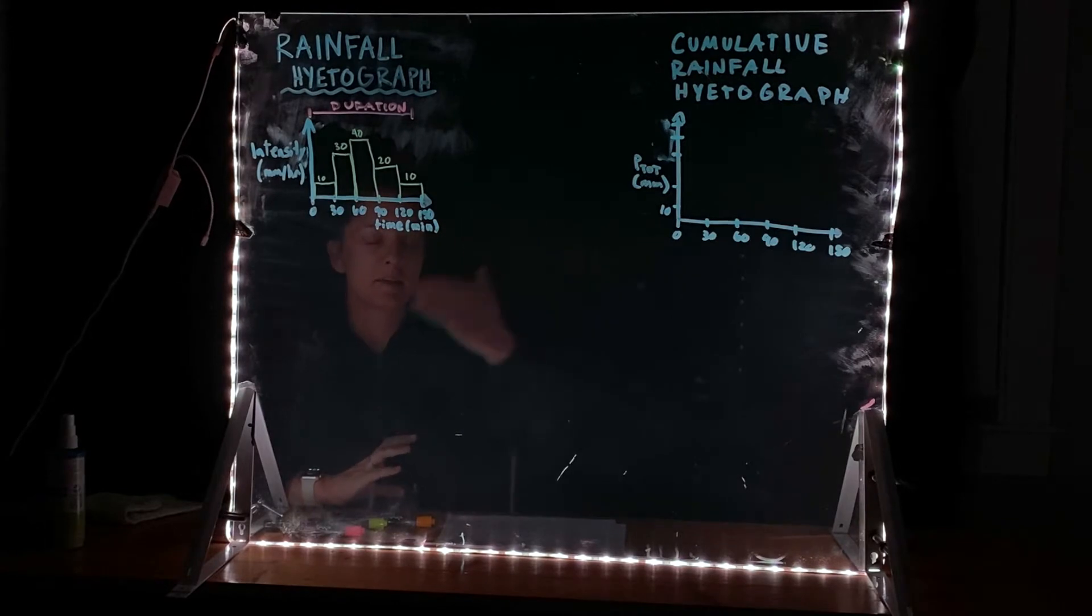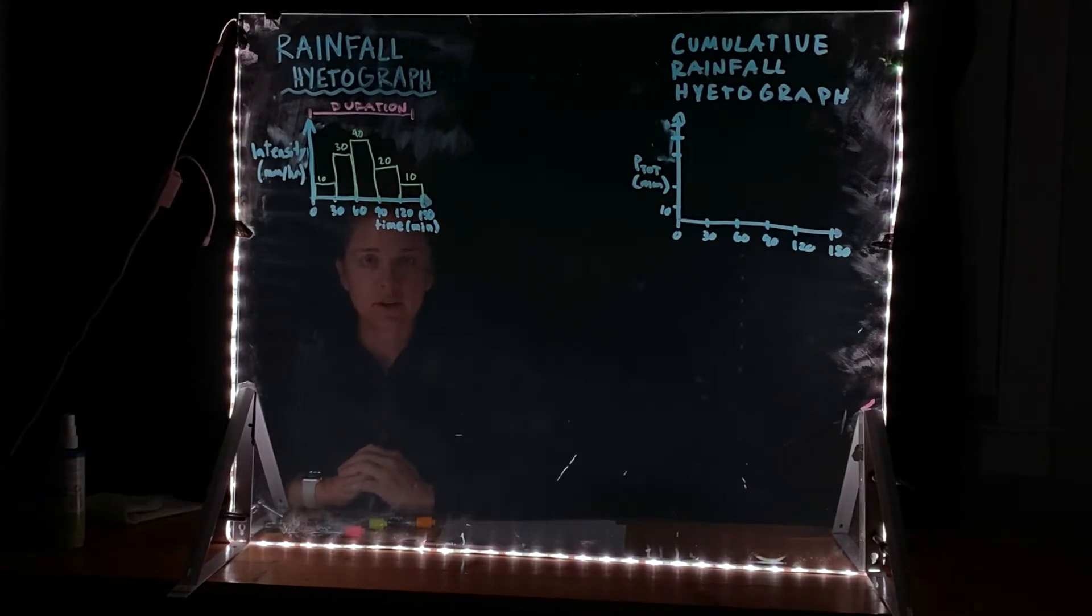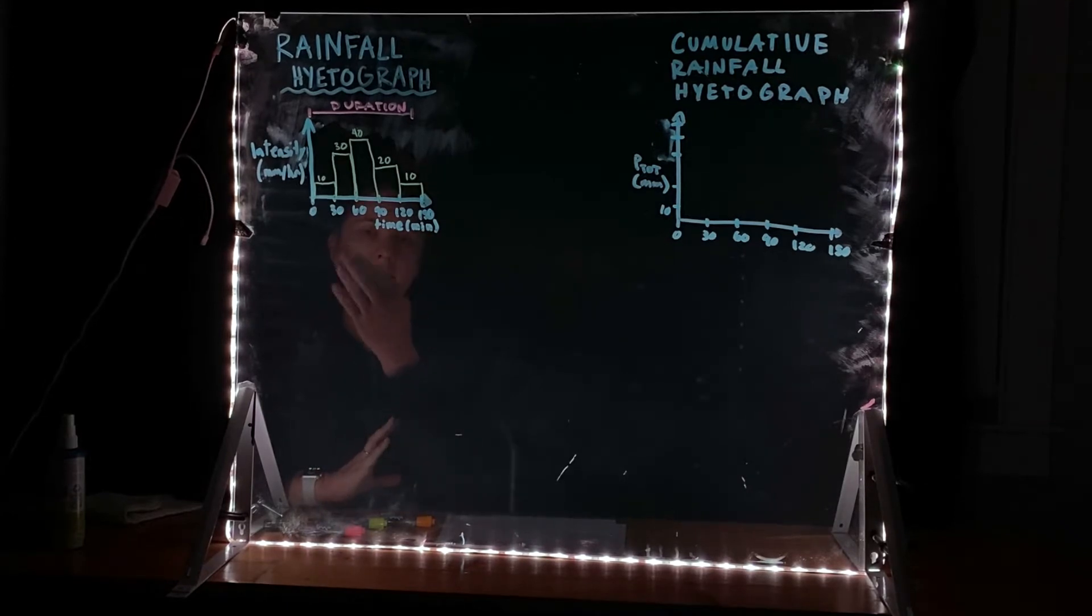So what is a rainfall hyetograph? It's kind of a funny word that most of us had probably never heard of until you got into this class. This is an example of a hyetograph, so as the name implies it's a type of graph and what it is showing us is the intensity of rainfall with respect to time. So here on the x-axis we have time, and on the y-axis we have intensity of rain. I'm giving it here as millimeters per hour.